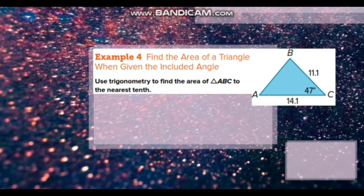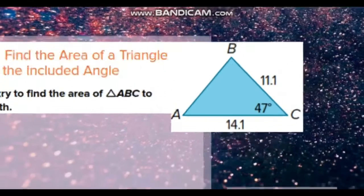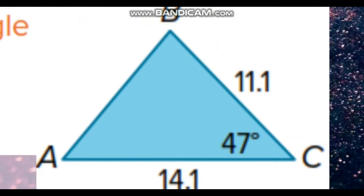Here's an example. Use trigonometry to find the area of triangle ABC to the nearest tenth, where the angle C is 47 degrees and the two legs beside it are 11.1 and 14.1.